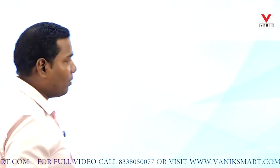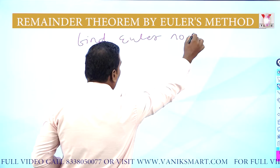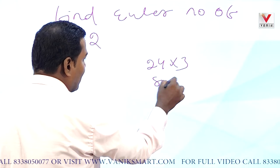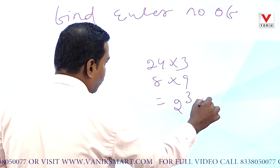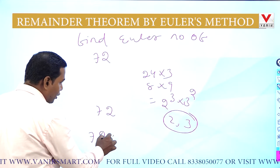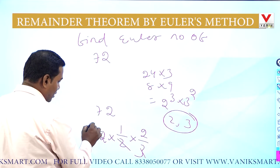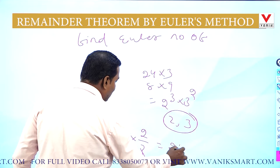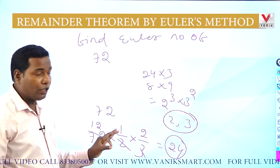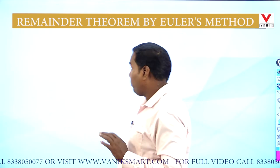Another example: find the Euler's number of 72. The prime factors of 72 are 2³ × 3², so the prime factors are 2 and 3. The Euler's number is 72 × (1/2) × (2/3) = 24. So 24 is the Euler's number of 72. That means from 1 to 72, the numbers not divisible by 2 and 3 total 24 numbers.